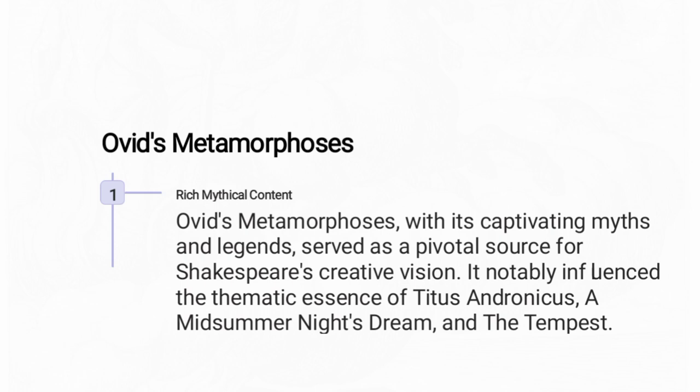The third source is Ovid's Metamorphoses. Ovid's Metamorphoses, with its captivating myths and legends, served as a pivotal source for Shakespeare's creative vision. It notably influenced the thematic essence of Titus Andronicus, A Midsummer Night's Dream, and The Tempest.